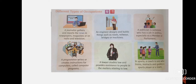Now there are different types of occupation. A journalist gathers news and reports in newspapers, magazines, radio, or TV. An engineer designs and builds things such as roads, railways, bridges, or machines. A politician is someone who has a job in politics, especially as a member of parliament.